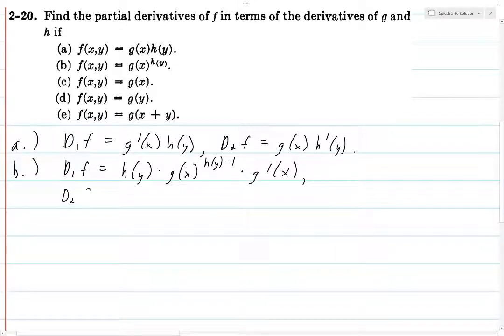And then for D2 of f, we have, so g is being raised to a function of h. So again, we're going to have to use the chain rule, but we start with g of x to the power of h of y times the log of g of x.